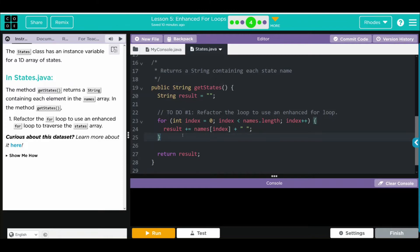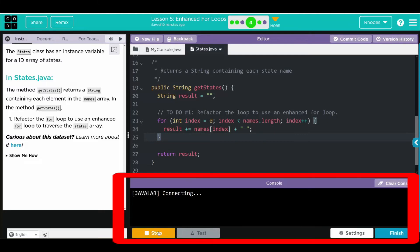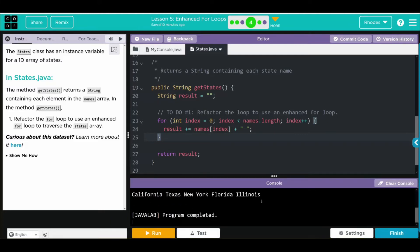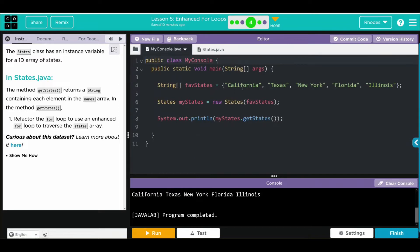First thing, let's run, make sure it works before we start messing with it. Let's hit run. We are getting our states printed off from our myConsole.